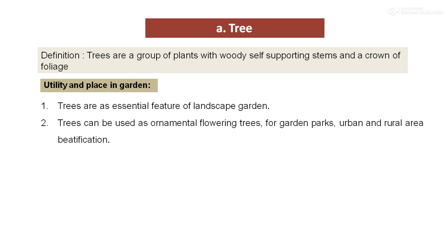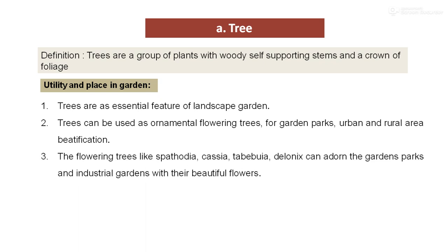Trees can be used as ornamental flowering trees for garden parks, urban and rural area beautification. The garden is a place which we consider for pleasantness and pleasure. All types of climate which create such surroundings benefit from trees, which contribute a very important role. Flowering trees like Spathodia, Acacia, Tabebuia, and Delonix can adorn a garden park and industrial garden with their beautiful flowers. When they are flowering, they become the center of attraction and increase the beauty of the garden.